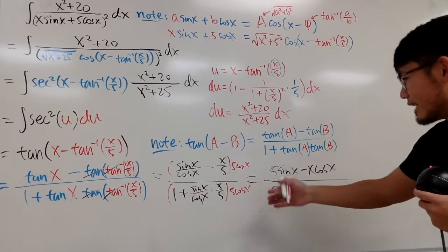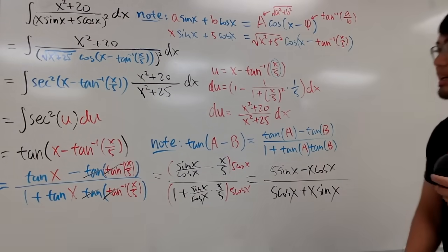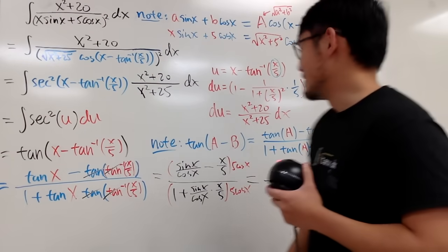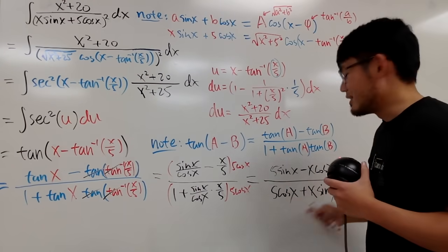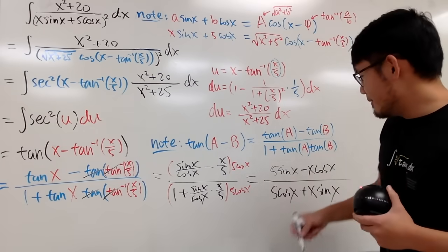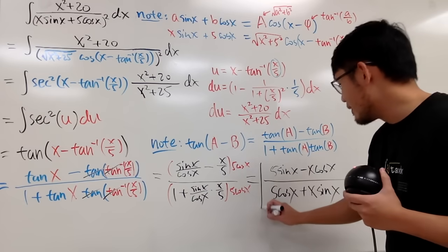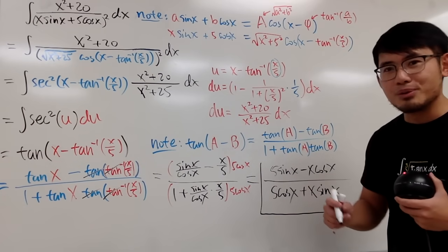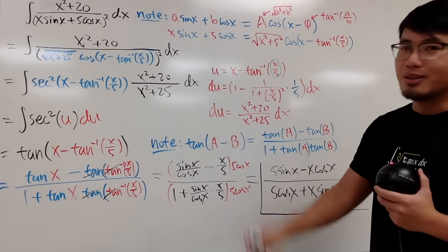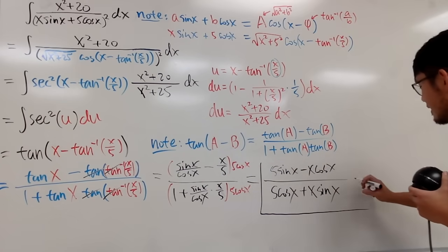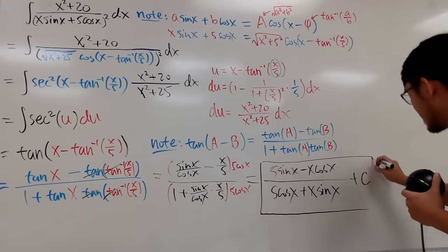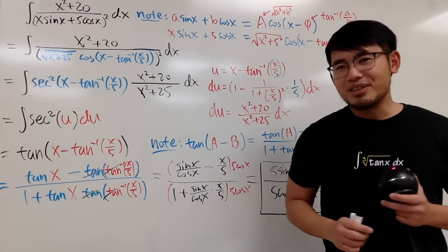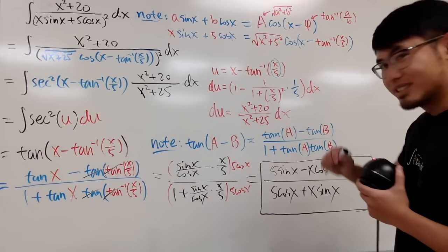So the denominator in the simplified form matches the original integral's denominator. Someone can verify by differentiation — the answer is tan(x − arctan(x/5)) + C. Don't forget the plus C! If you're new to the channel, please subscribe. Thank you so much, and that's it!